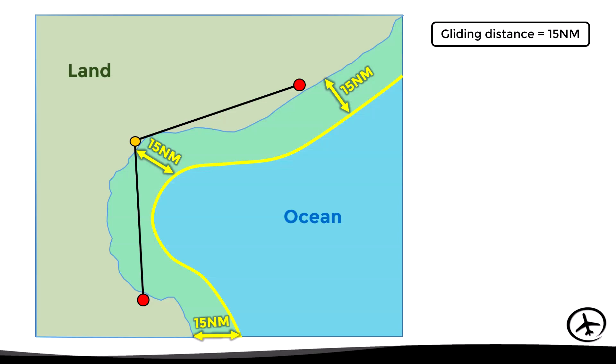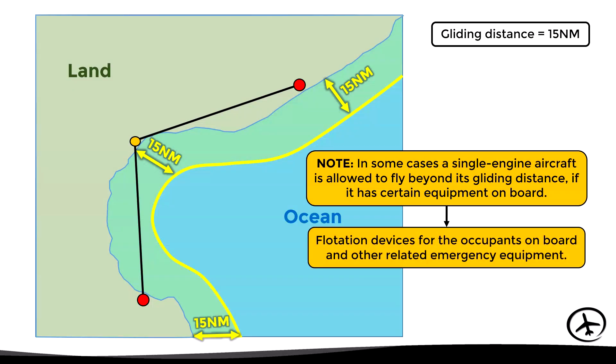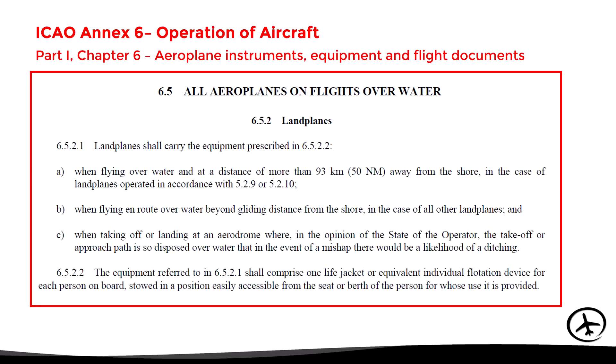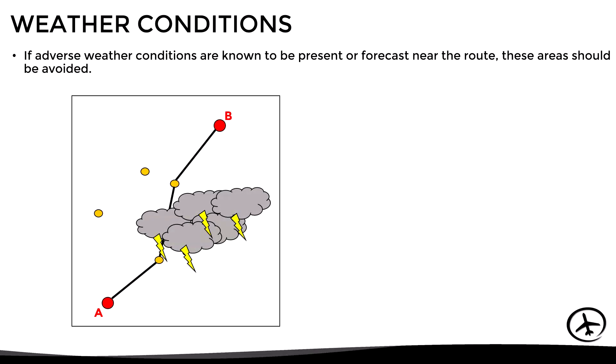In relation to this rule, there is an important caveat: in some cases a single-engine aircraft is allowed to fly beyond its gliding distance if it has certain equipment on board, which normally consists of flotation devices for the occupants and other related emergency equipment. This is mentioned in Chapter 6 of ICAO Annex 6. However, what prevails is the regulation in force for each state. Let's now move on to weather conditions. Bad weather represents a major threat to small general aviation aircraft, especially those not equipped with airborne weather radars.